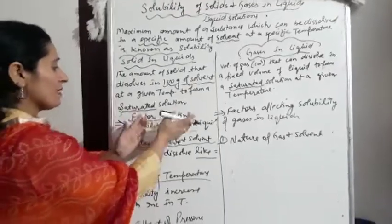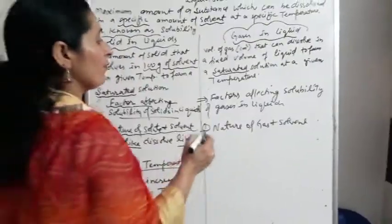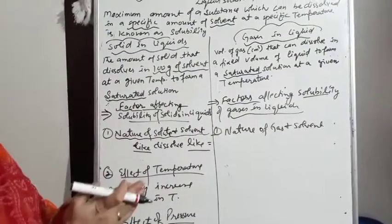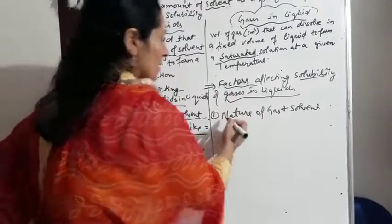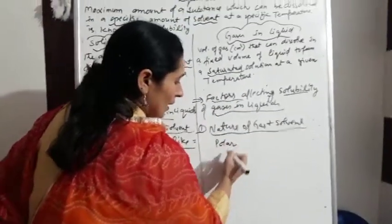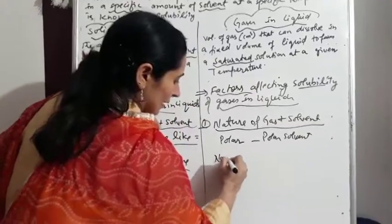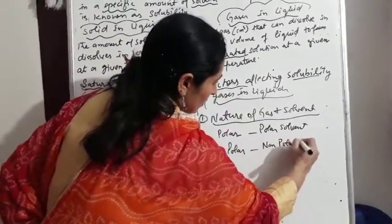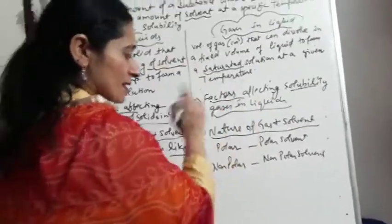Just as we studied factors for solids in liquids, now let's look at factors affecting solubility of gases in liquids. There are three factors here as well. First is nature of gas and solvent. If the gas is polar, it will be soluble in a polar solvent; if non-polar, it will be soluble in a non-polar solvent — again the 'like dissolves like' concept applies.